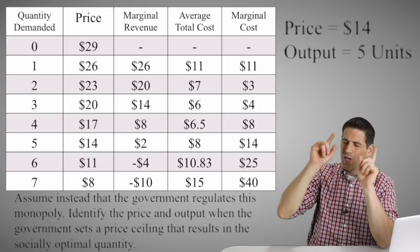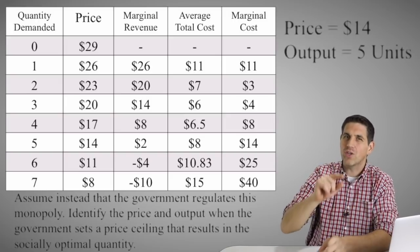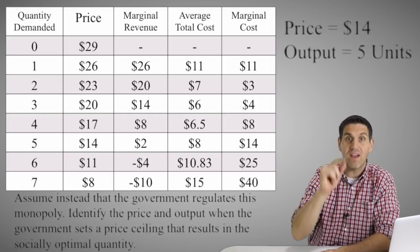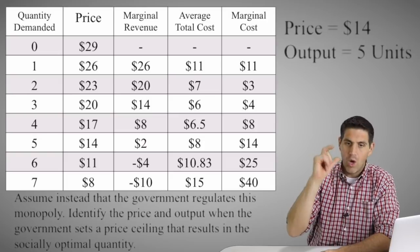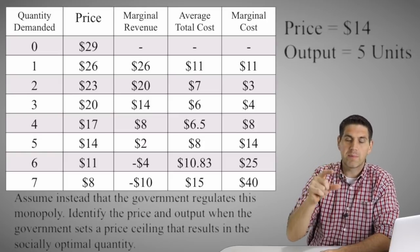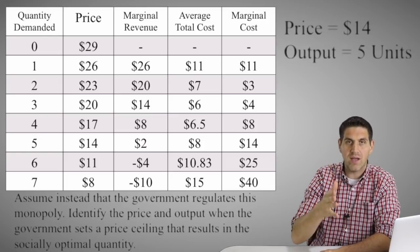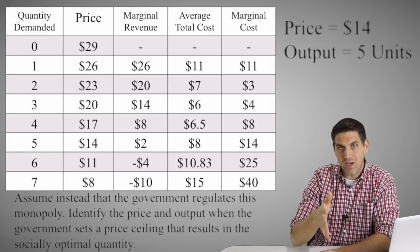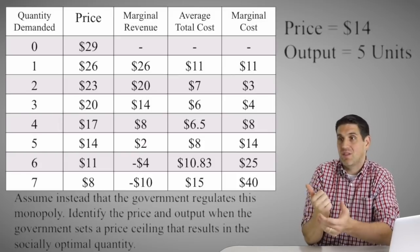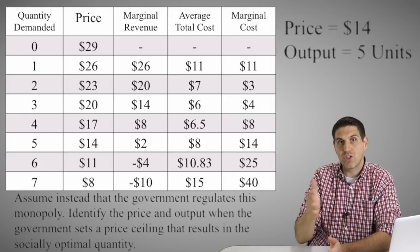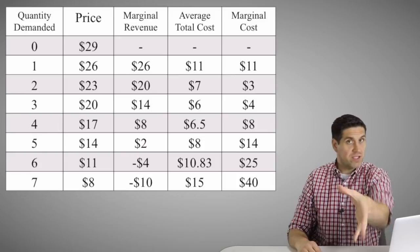The socially optimal output is five and the price is $14. On a graph you'd find this where the marginal cost curve hits the demand curve — it's the same idea on the chart: just find when the price and the marginal cost are equal.